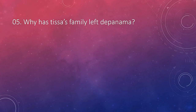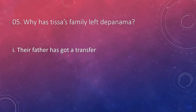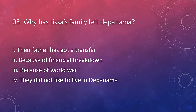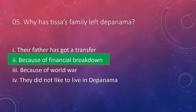Question number five: why has Thyssa's family left the Parnava? The answers are their father got a transfer, because of financial breakdown, because of world war, or they did not like to live in the Parnava. The answer is because of financial breakdown. As mentioned in the story, because of the world war, the economy of the world collapsed, and Sri Lanka too had to face its adverse effects. Their financial condition broke down, making them poor, and they had to move from place to place like gypsies.